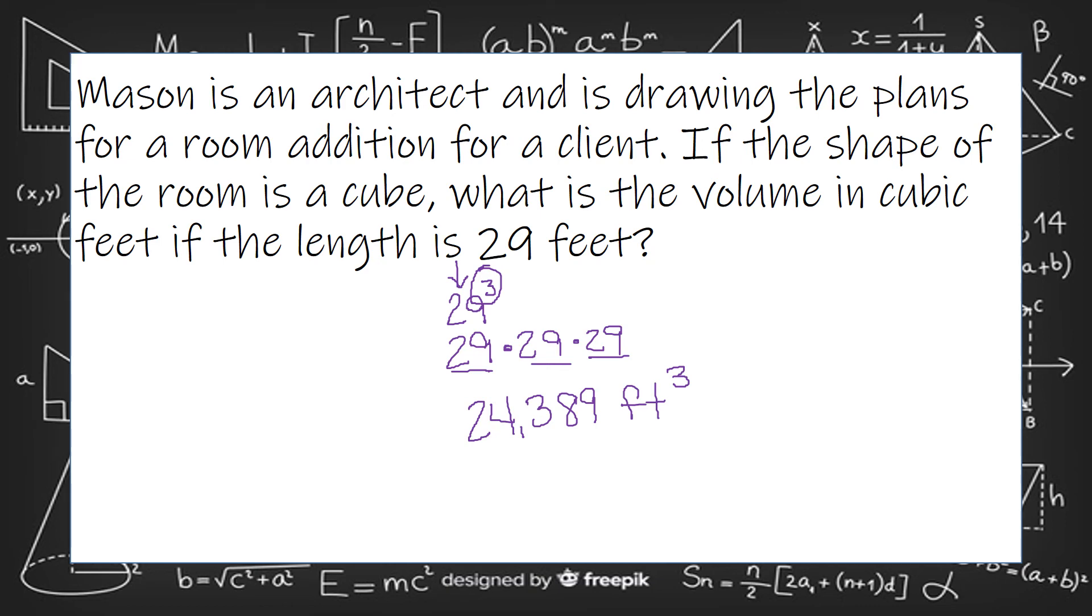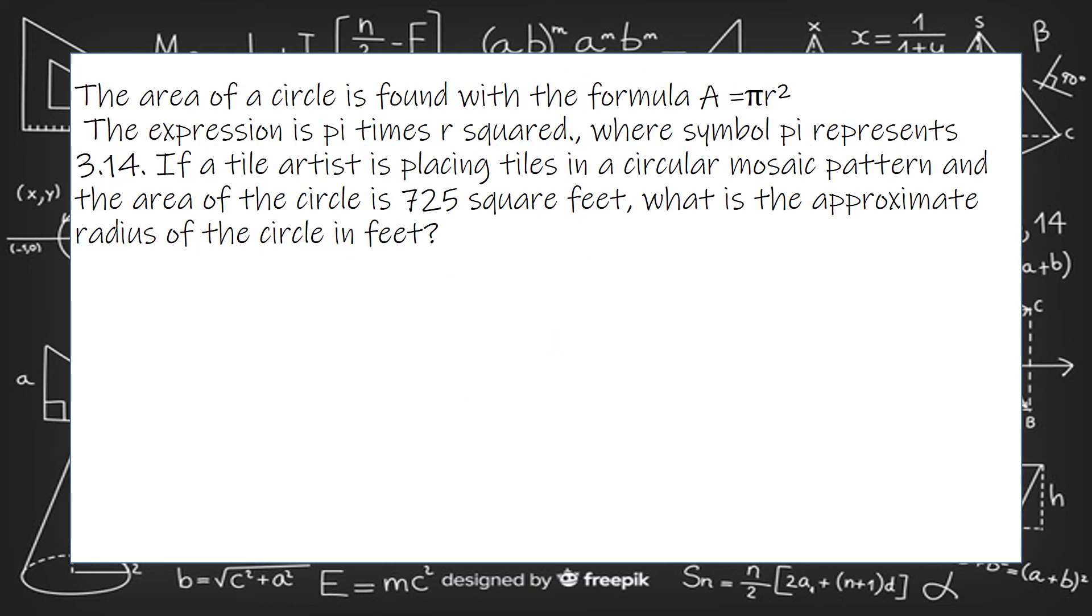the area of a circle is found with the formula A equals pi r squared. The expression is pi times r squared where the symbol pi represents 3.14.